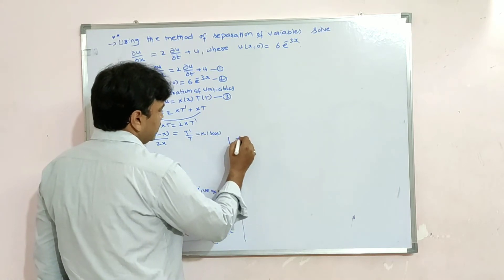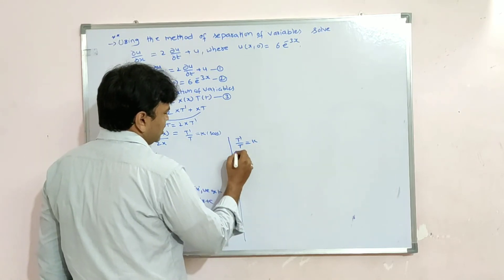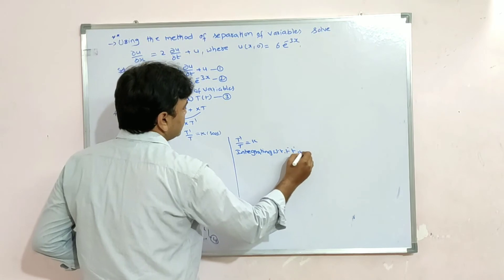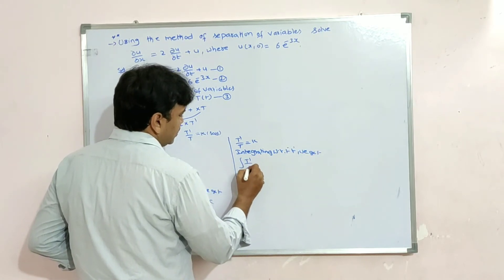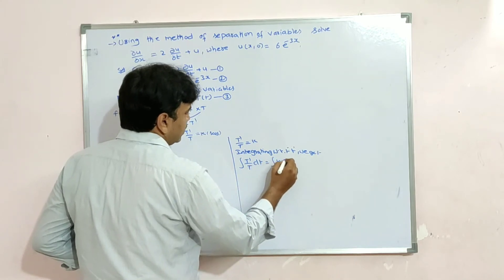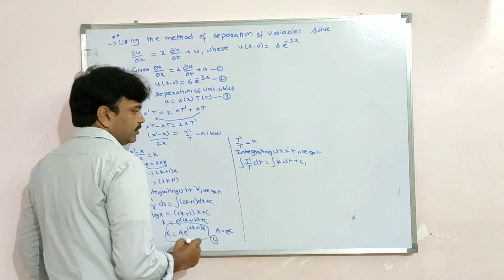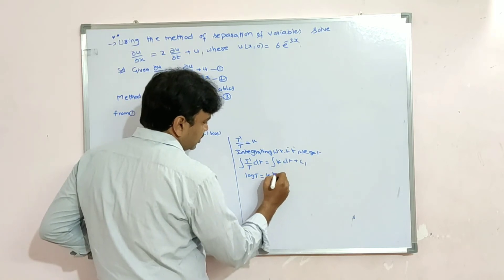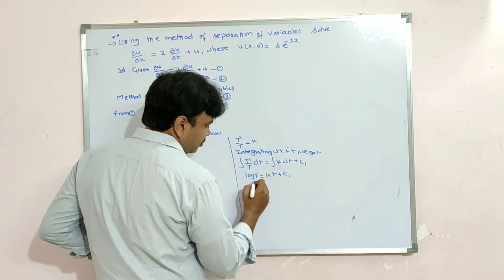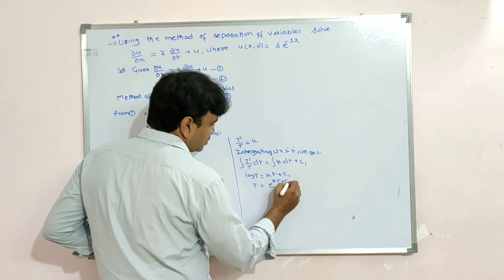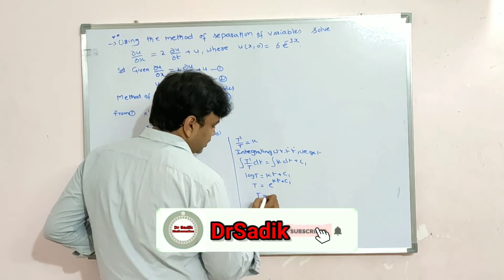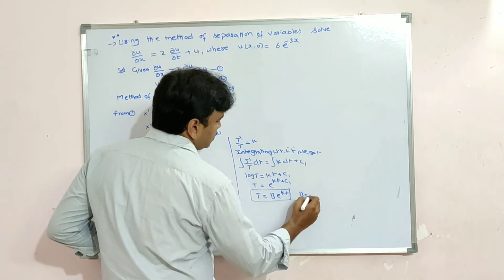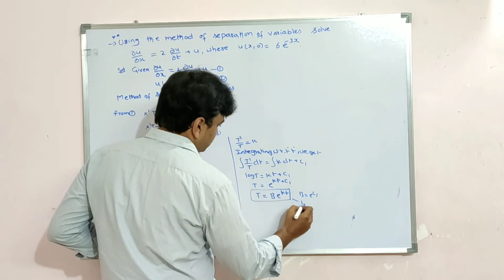Taking the second part: T'/T = k. Integrating with respect to t: log T = kt + c₁, so T = e^(kt + c₁), which gives T = B·e^(kt), where B = e^(c₁).